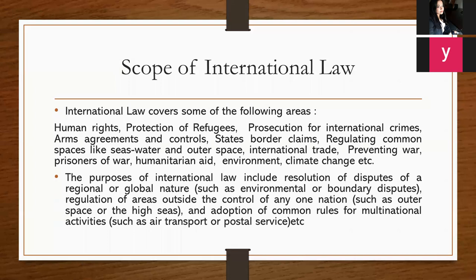International law covers the following areas. What is its scope? It covers human rights, protection of refugees, prosecution for international crimes, arms agreements and control, and state border claims — where countries fight over border disputes. For example, the world knows about India and Pakistan's border dispute over Kashmir.